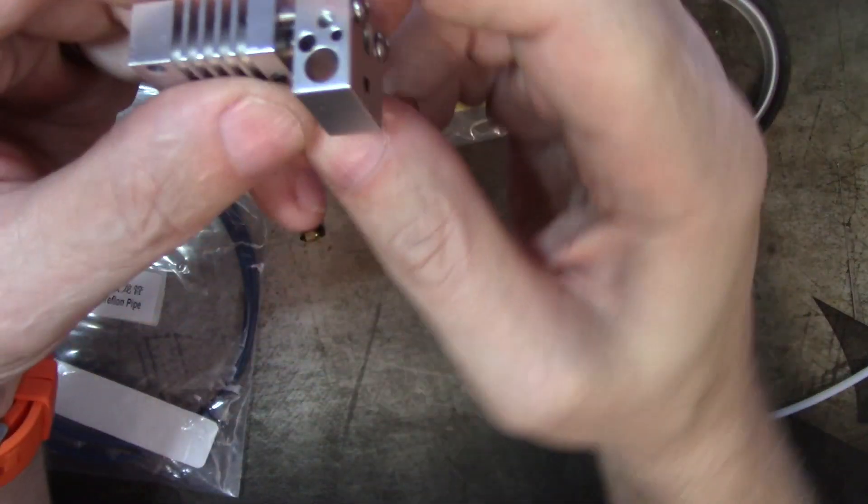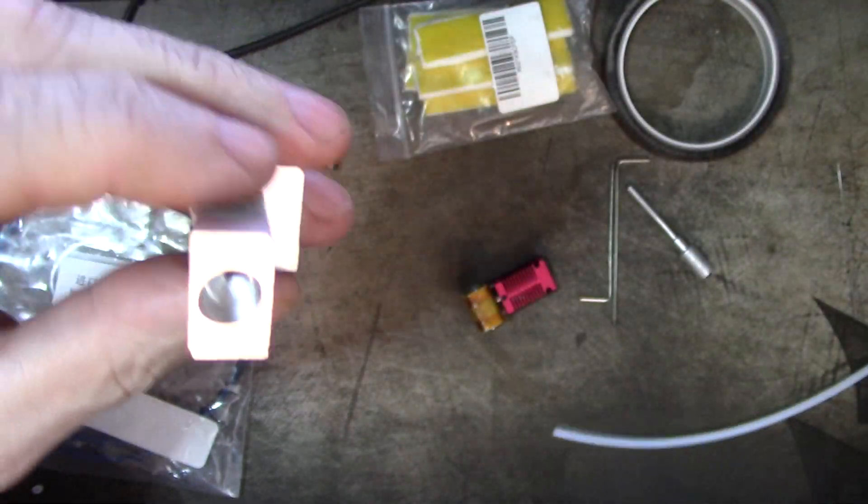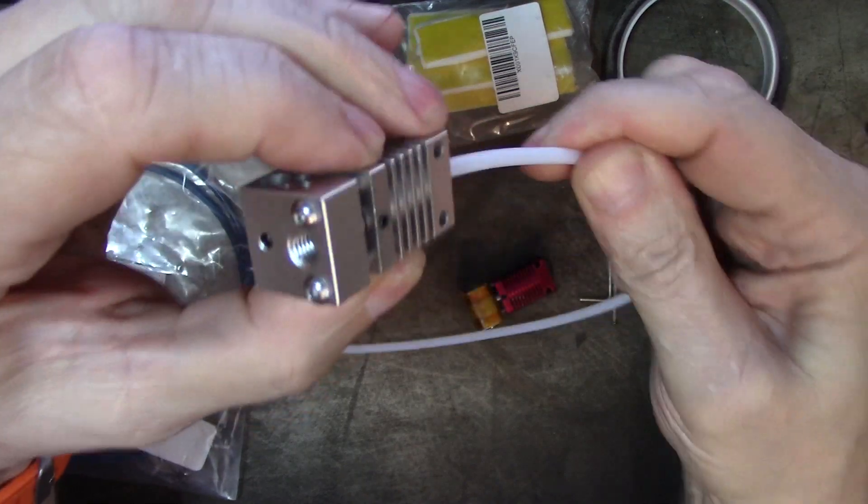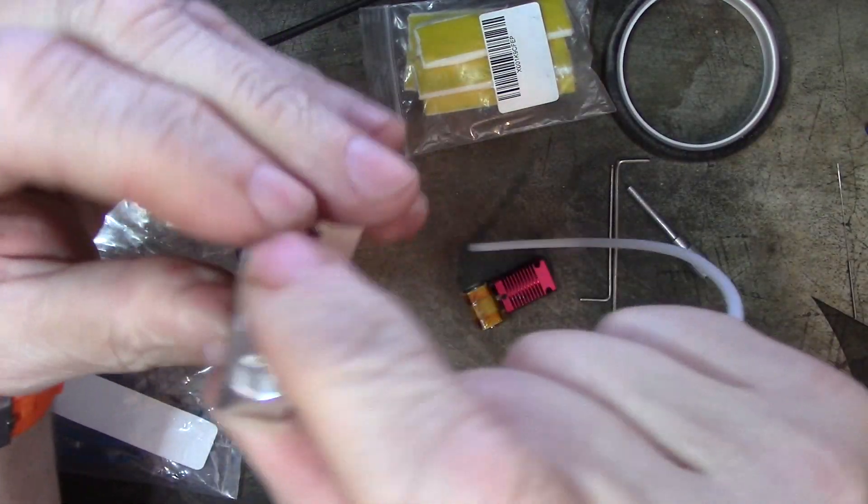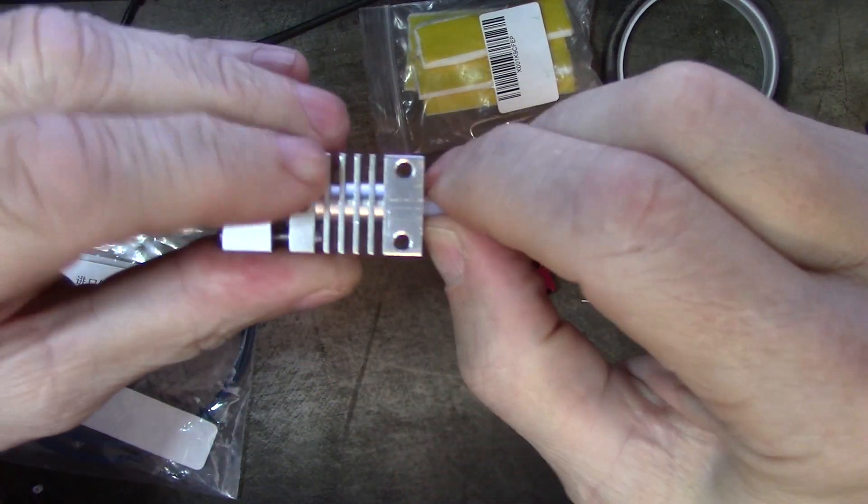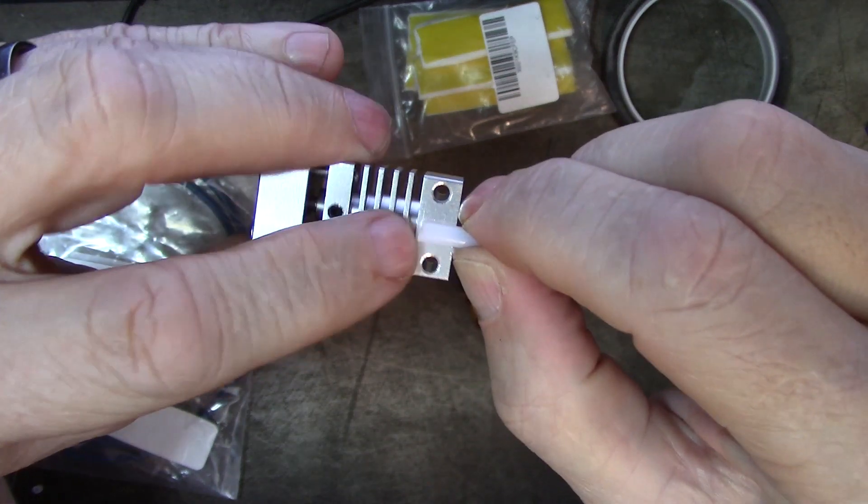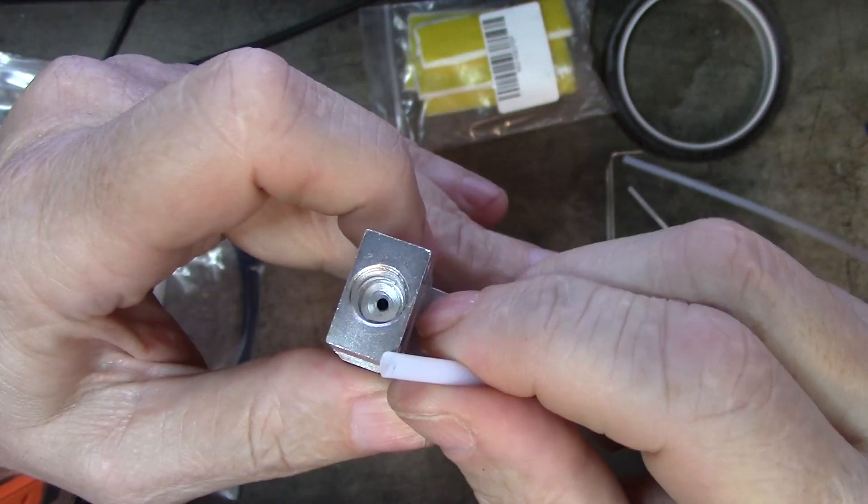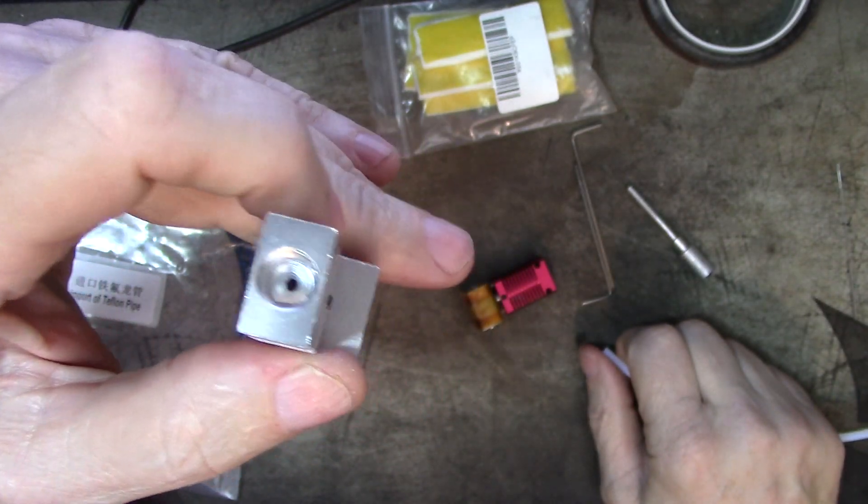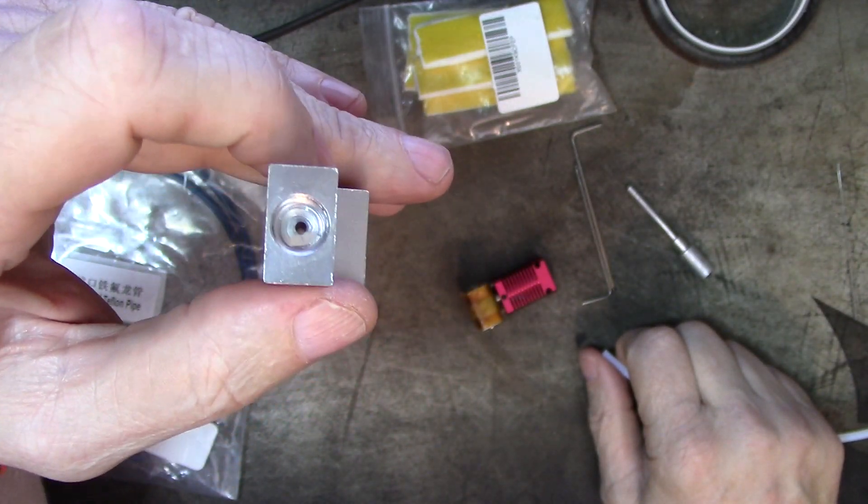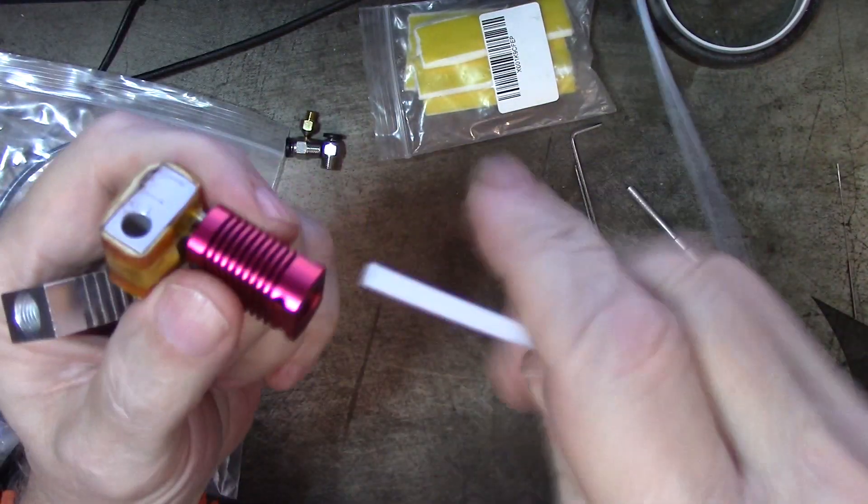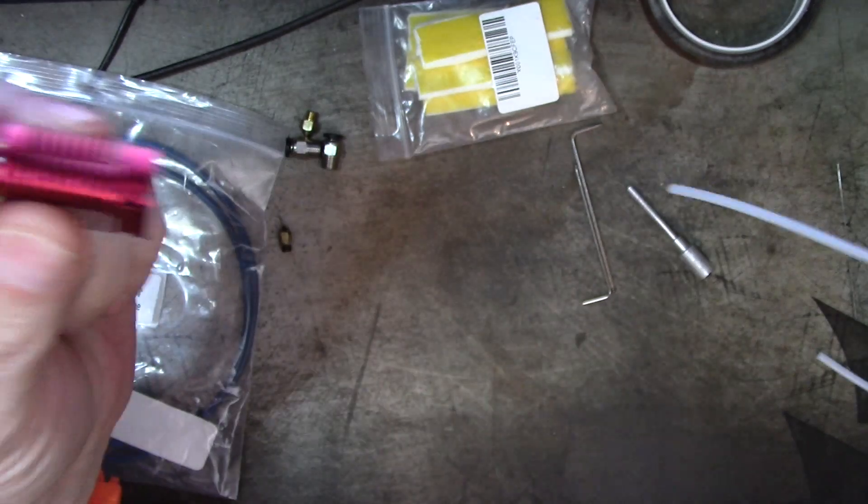So notice here on the all-metal hotend where it goes in, this is how far the Bowden tube goes, right to there. It won't go any further. From that much downward, from here on downward, the Bowden tube does not go. The hole down the center is only the size or slightly bigger than the size of the filament. It is supported by metal the whole distance, where in this one, it is supported by Bowden tube the whole distance.